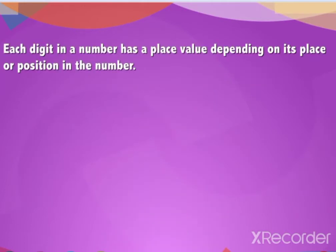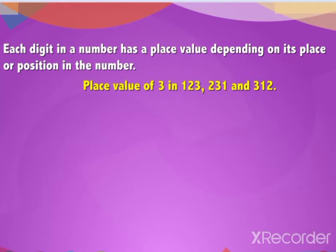Each digit in a number has a place value, depending on its place or position in the number. For example, let us see the place value of three in one hundred and twenty-three, two hundred and thirty-one, and three hundred and twelve.